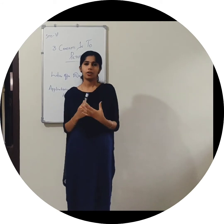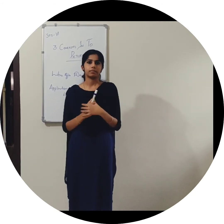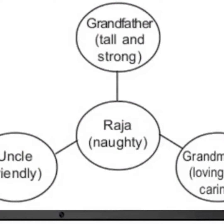Let's see how we can draw the concept map. Have you ever seen this picture before, in your English textbook? It is a concept map, or it is a family tree. This is Raja's family. Raja is naughty, and his uncle is friendly.